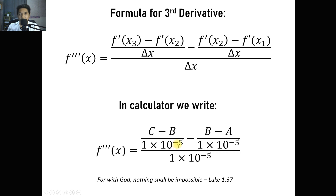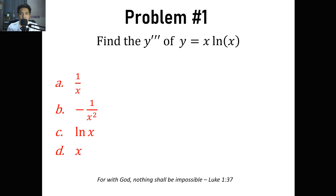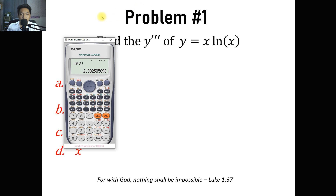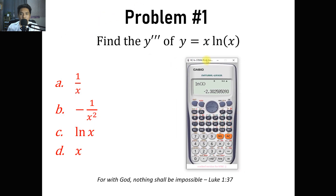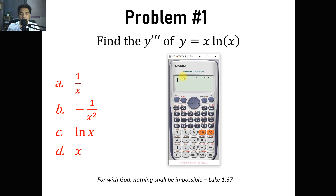So how do we do that? In order for us to understand this, we have several examples. Let's try number 1: find y triple prime of y equals x ln of x. The first thing we are going to do is use Shift to calculate the derivative of x ln of x at x sub 1, x sub 2, and x sub 3 — three values of x. So we input x ln of x and use 0.1, then calculate the first derivative of this at x equals 0.1.